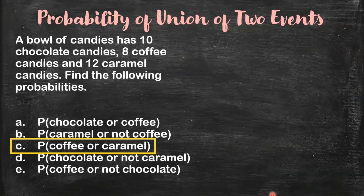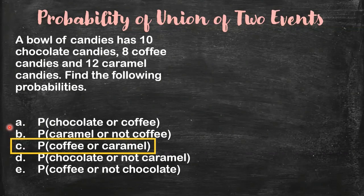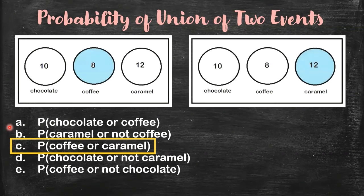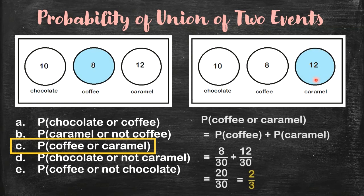Now we answer letter C. This one is similar to letter A. From the Venn diagram, we can easily get the probability of getting a coffee candy or a caramel candy. It's 8 plus 12, you get 20 over 30. In lowest terms, that is 2 over 3. But if you want to write the solution, you may have this.